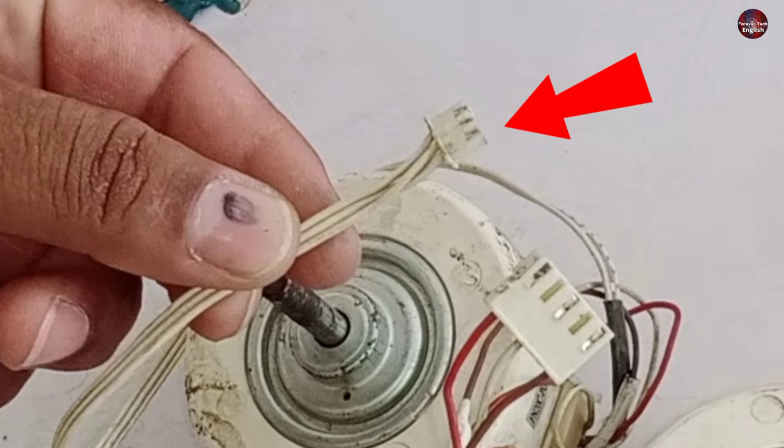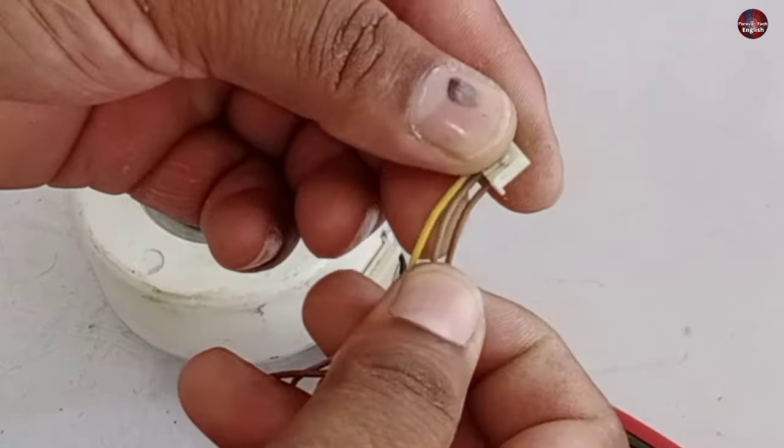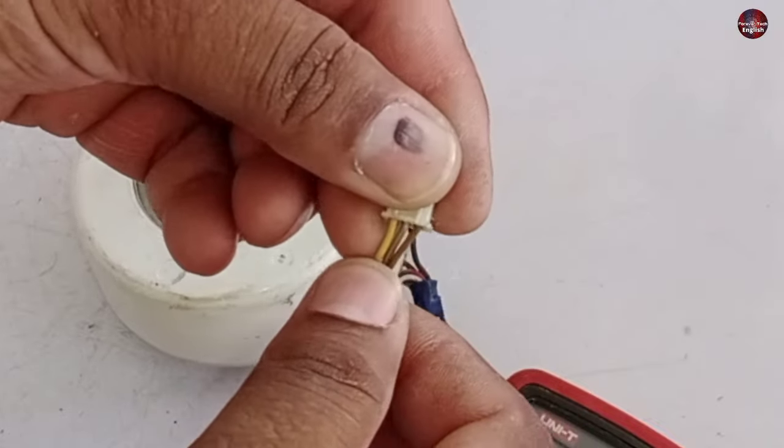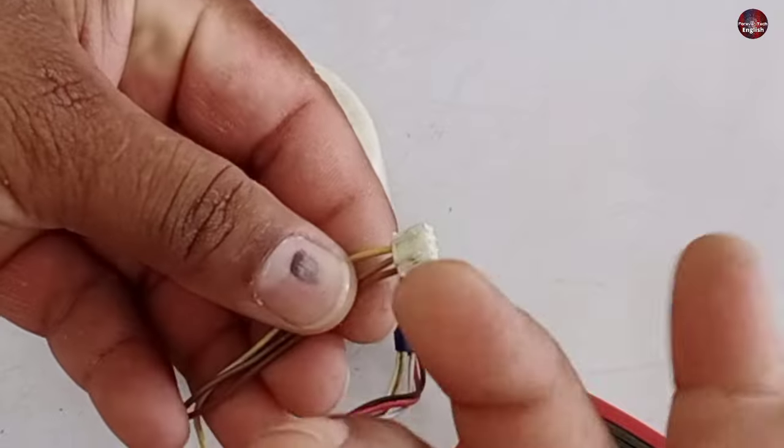These three wires with a small connector are the feedback, PG, or FG wire. PG means pulse generator, and FG means frequency generator. You can name this connector whatever you like between the names I told you.